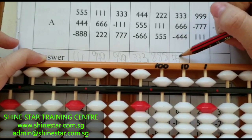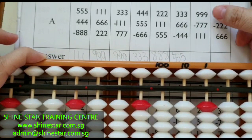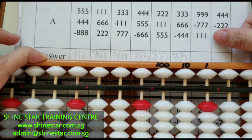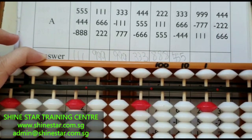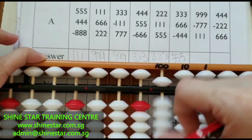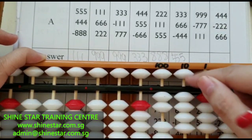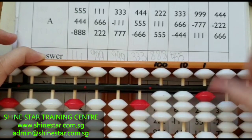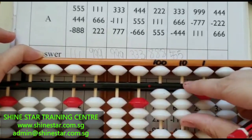The next question: 999 minus 777 plus 111. The answer will be 333.